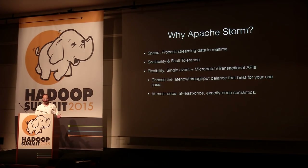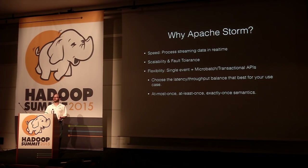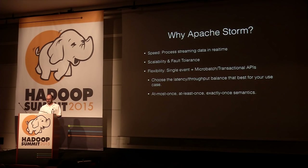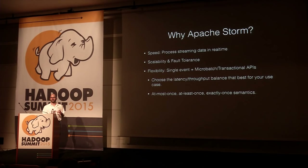Why use Apache Storm? Speed — processing streaming data in real-time — plus scalability, fault tolerance, and flexibility. Storm has APIs for processing single events and for micro-batch and transactional processing, giving you the option to choose the latency and throughput balance best for your use case. With certain IoT use cases, low latency is essential, and Storm gives you options there, whereas some other streaming platforms force you into a specific model like micro-batch only.